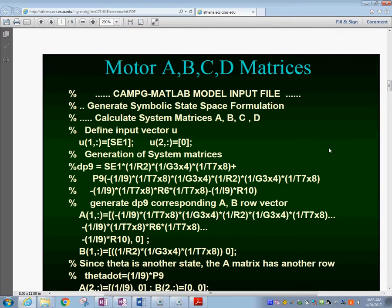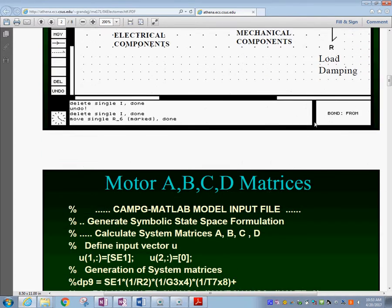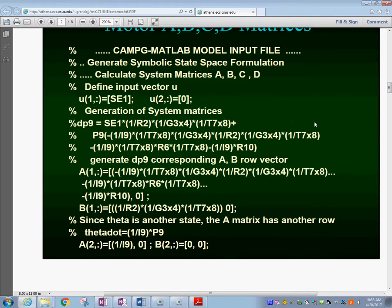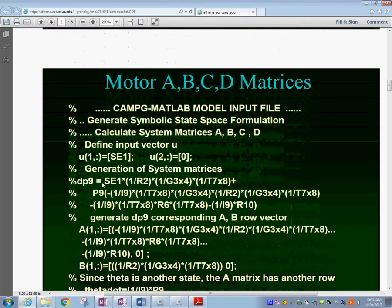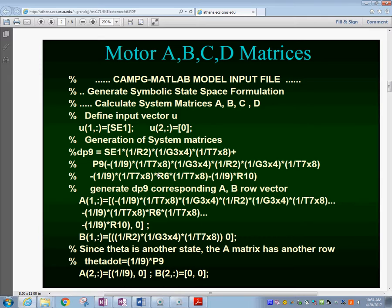When you put this model into the CAMP-G software, the computer is going to produce the state space form—the A, B, C, and D matrices. The first thing it does is derive the differential equation. In this case we have only one because if you look at the elements in integral form, the I's and C's that produce equations, we only have one. That's the reason why you only have dP9 as the derivative here, and then of course the output.